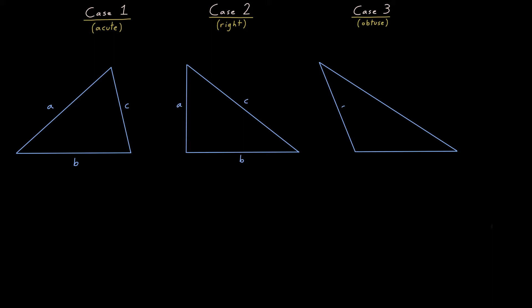I'll label the sides A through C, and let's label the angle at issue theta. Theta is acute on the left, right in the middle, obtuse on the right.